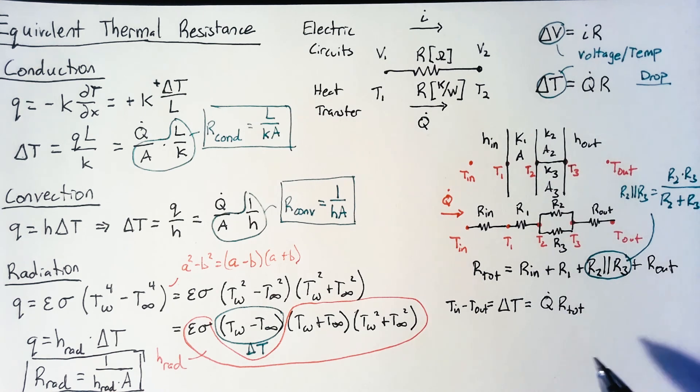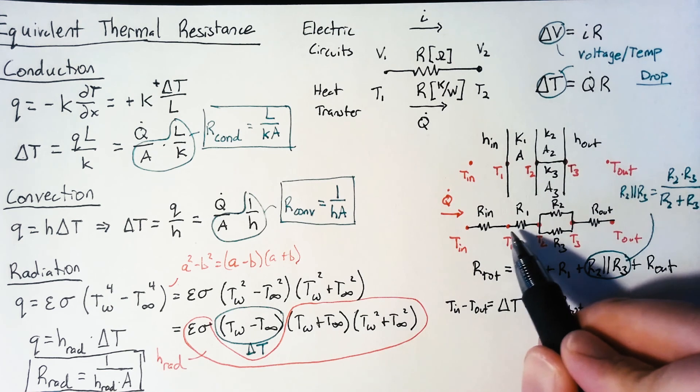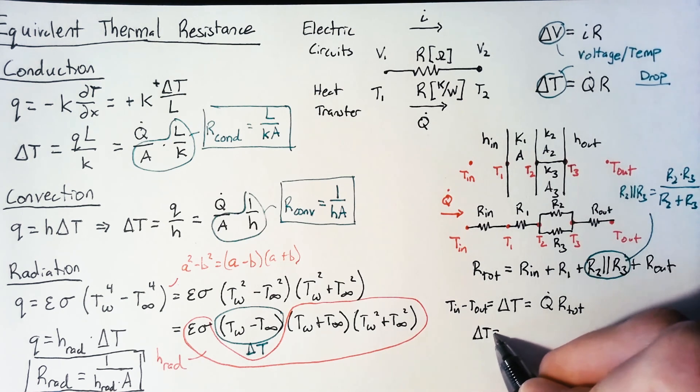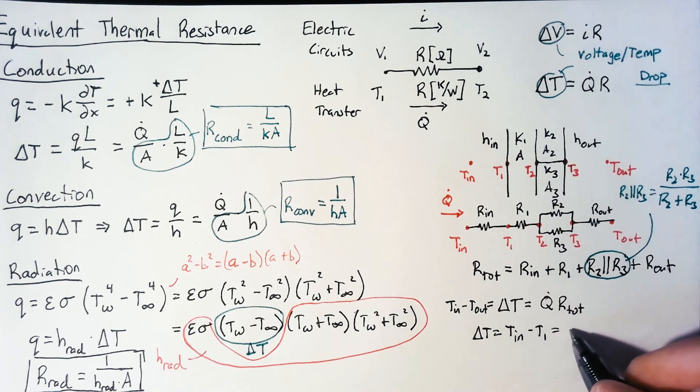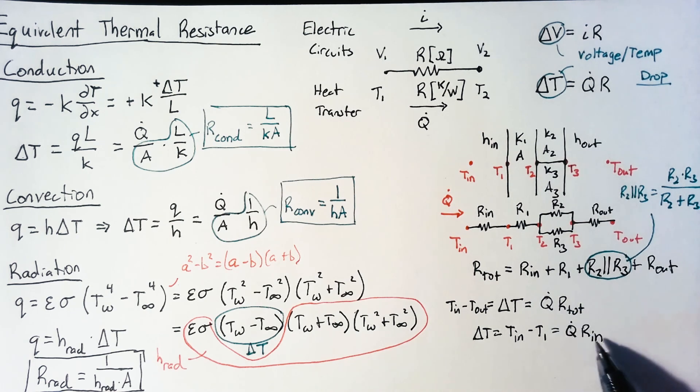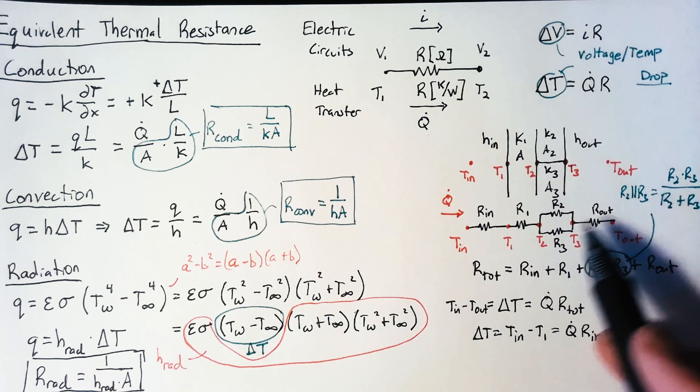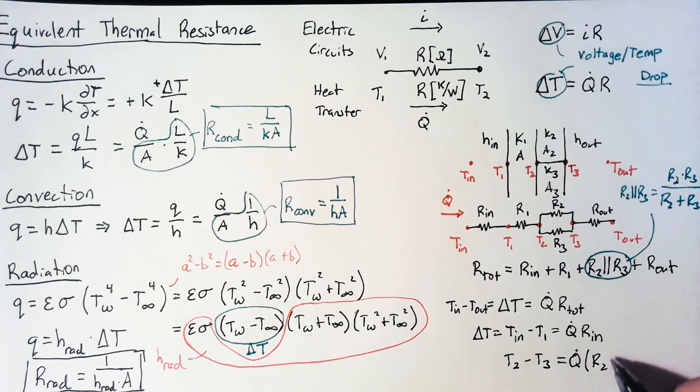Then once we find Q dot, we can use that to go find individual temperatures throughout the rest of the system. So for instance, if we wanted to find the temperature on the surface of the wall, we would just look at the delta T, which in this case is going to be T in minus T one, because we're just looking at this first resistor. And again, since we're looking at that first resistor, we just write R in here. And this, we know what Q is from this first equation. We should know what R in is, and from that we should be able to figure out what T one is. Now, if we're doing this section right here, our Q dot actually splits, but we can go ahead and just write the equivalent resistance of the two resistors in parallel and say that T two minus T three is going to be Q dot multiplied by those two resistors in parallel.